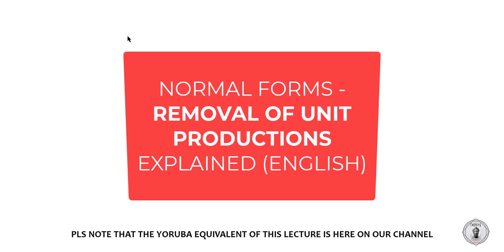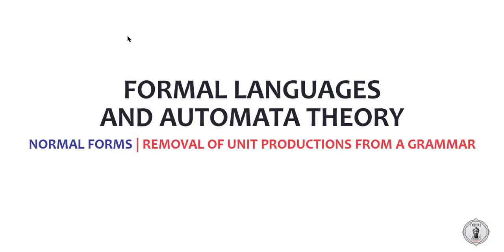Hello everyone, once again welcome to our channel, Computer Science in Yoruba and English. In this lecture we're going to be looking into removal of unit productions. In the last lecture we looked into removal of epsilon productions, so if you know how to remove epsilon productions then you are good to go for this lecture. We already learned one, which is removal of epsilon productions, and in this lecture we're going to be considering removal of unit productions.